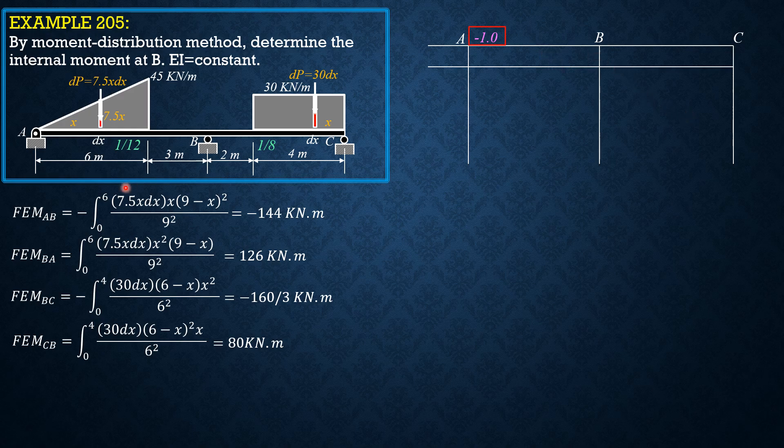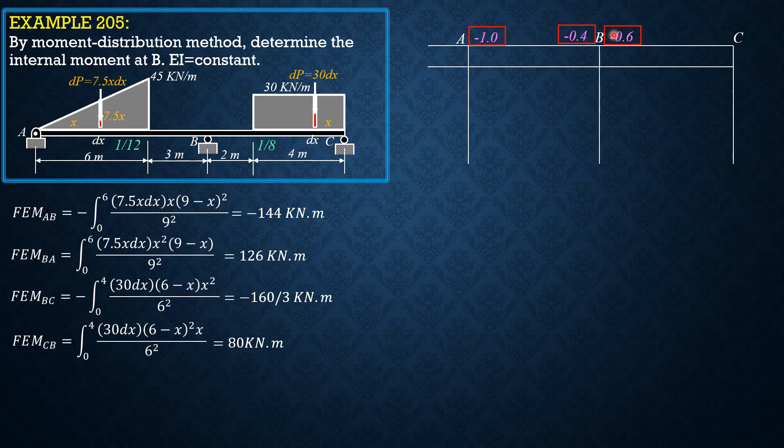At B, it is negative 1 over 12 plus 1 over 8, so it is negative 0.4, therefore here it's negative 0.6. And at C, it's negative 1.